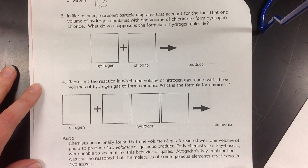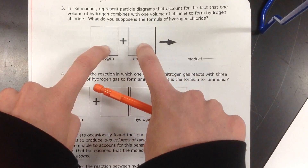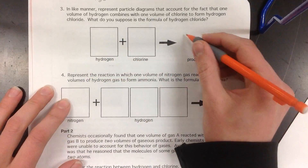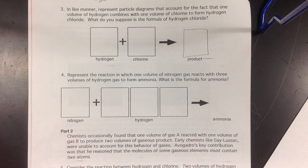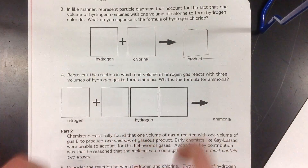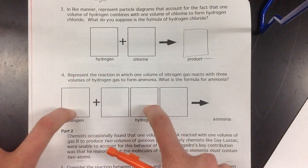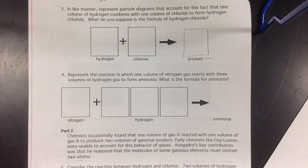Now, for problems 3 and 4, very similar process. We've got similar size boxes, we're forming our product, it just says one volume of product. So go ahead and fill in what we have for hydrogen-chlorine and nitrogen-hydrogen for these two examples. Fill that in for your products.